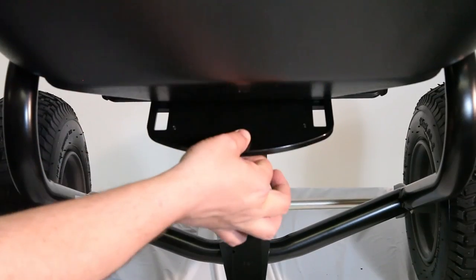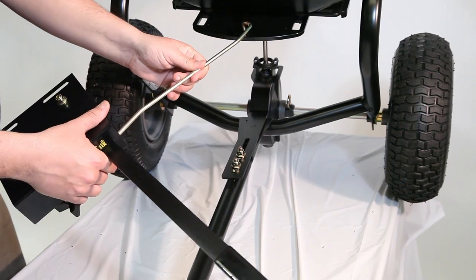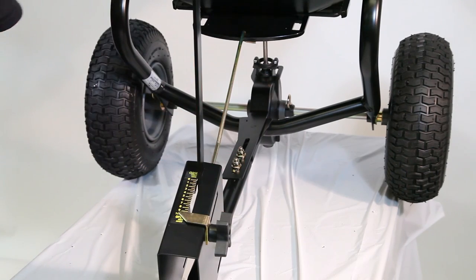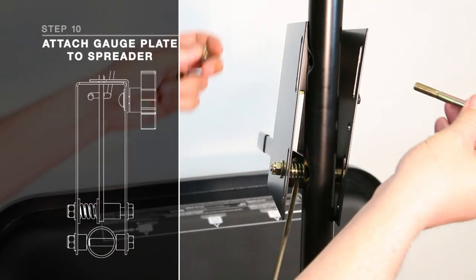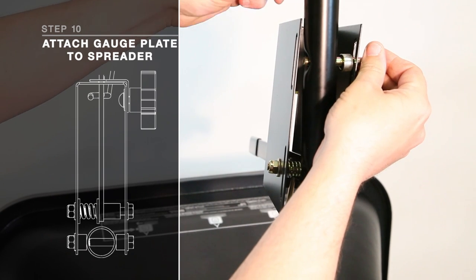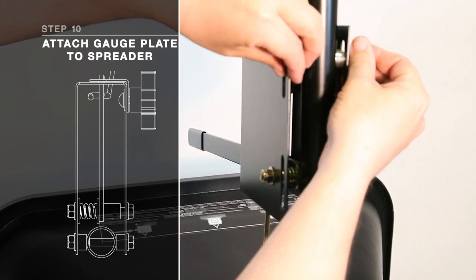Insert the S-shaped end of link rod number 12 through the upper hole of the flow control handle number 31. Attach the gauge plate to the toe tube using a hex bolt number 36 with two flat washers number 32 and two pivot bushings number 38.